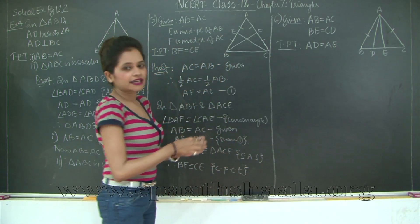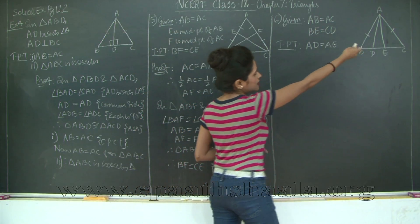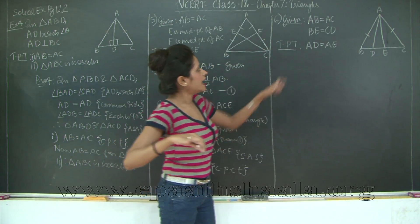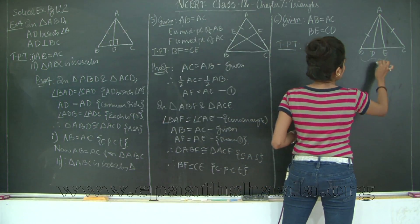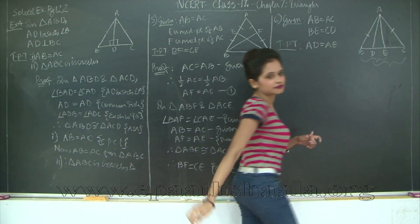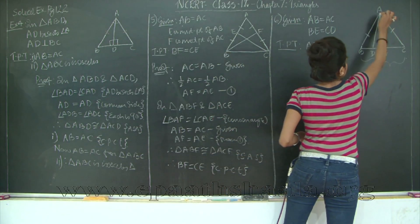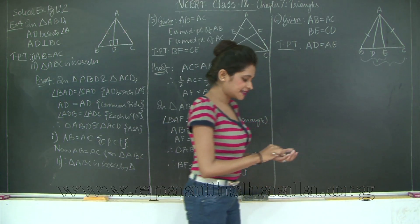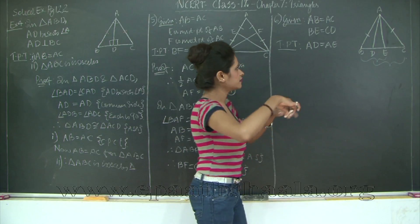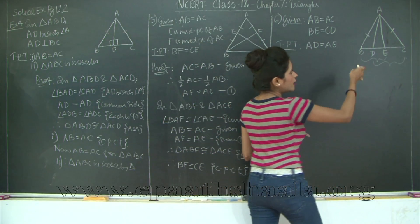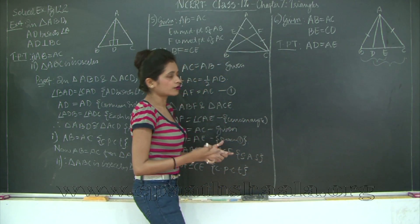Let's proceed to question six. I have a triangle with two lines within it. Given: AB is equal to AC, marked with single dashes, and BE is equal to CD. I need to prove that AD is equal to AE. To prove AD equals AE, if I prove any two triangles congruent I can prove that the corresponding sides are equal. I will take triangle ABD and triangle ACE.